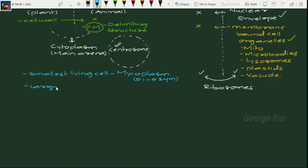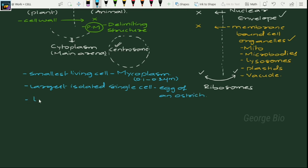The largest isolated single cell is the egg of an ostrich. The longest cell is the nerve cell.